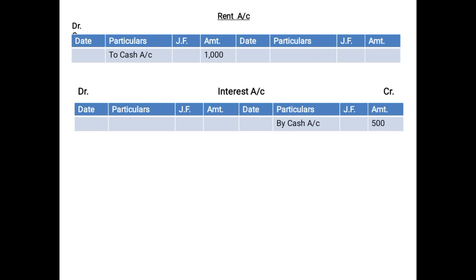For the interest example: cash account is already prepared. Since cash is debited in the entry, we record the credit aspect — interest is credited — and post on the debit side as 'To Interest Account 500'. While preparing the interest account, since interest is credited, we record the debit aspect — cash is debited — and post on the credit side of interest account as 'By Cash Account 500'. I hope the posting is clear, especially the rules. Please revise these examples once again.